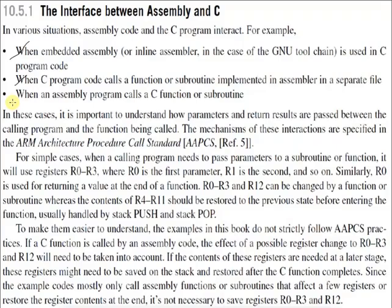Another condition is when an assembly program calls a C function or subroutine. These are not the only three conditions requiring an interface between assembly and C — there are several examples — but let us restrict to these three simple conditions.